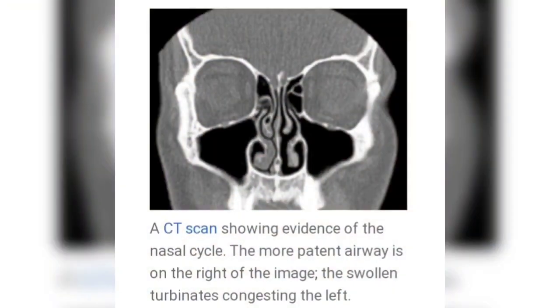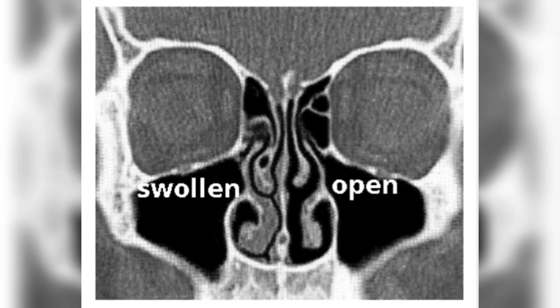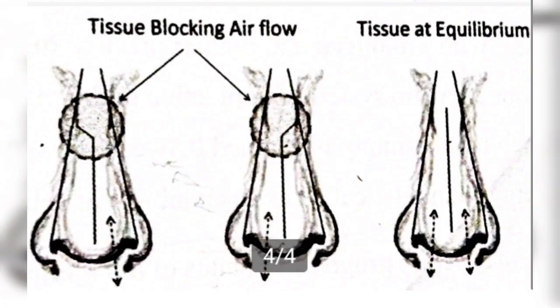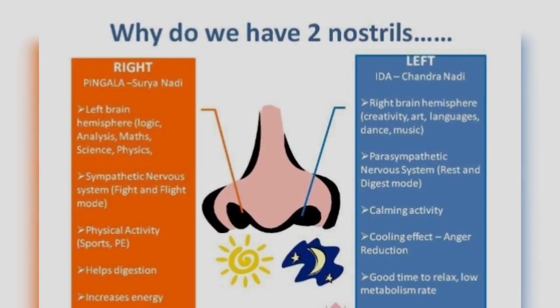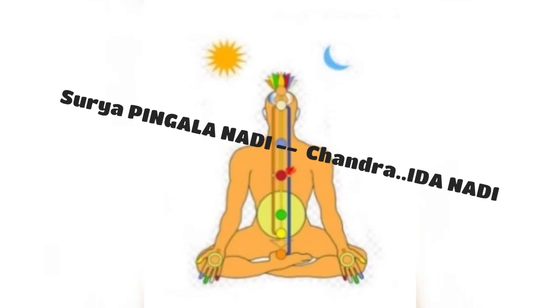To know the scientific reasoning behind Nadi Shuddhi Pranayama, we need to know about the nasal cycle, which yogis recognized through their mindful observation. It seems scientific research about 20 years ago proved the theories behind Nadi Shuddhi Pranayama. You would have noticed that most of the time only one nostril is fully open and the other is partially or fully blocked. This is because of the inflation of a spongy tissue known as erectile tissue present within the nose, which follows a periodical cycle alternating between the right and left nostrils and occasionally remaining at the center. Yogis named these energy channels: the right nostril as Surya or Pingala Nadi, and the left nostril as Chandra or Ida Nadi.